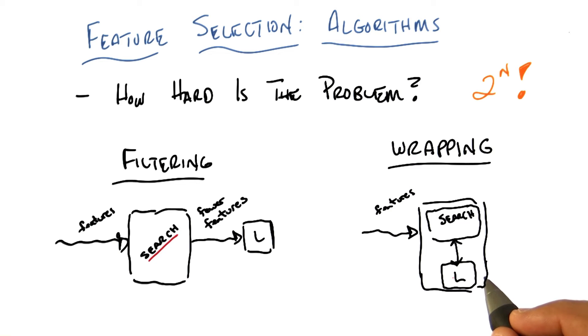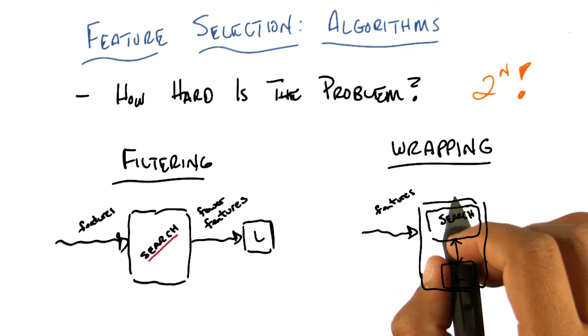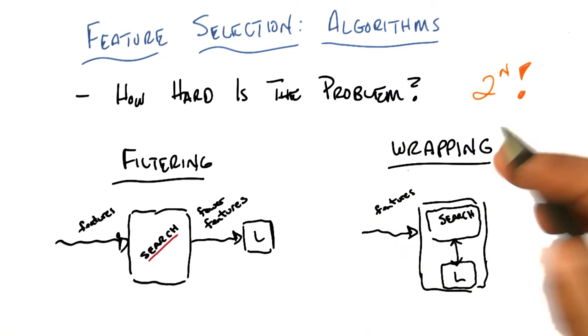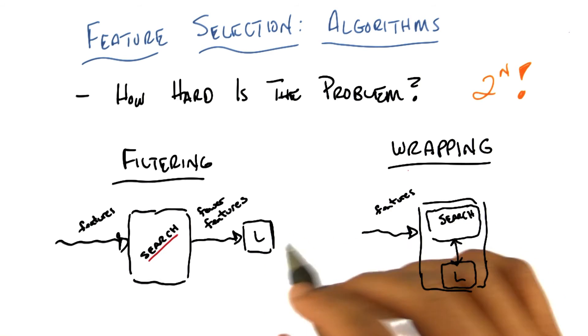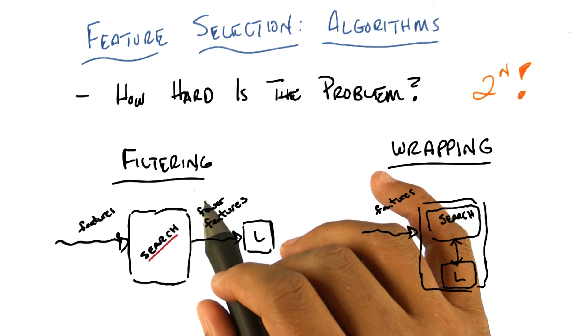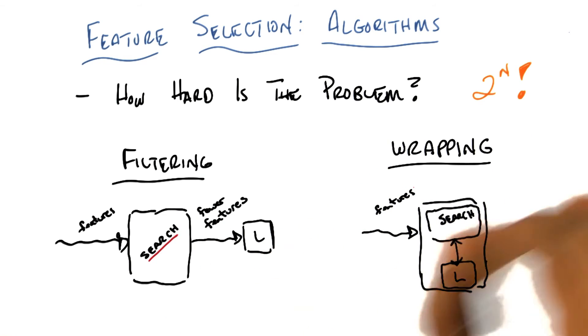I think so. Okay. So you might ask yourself, okay, great. So you've got two different approaches to this. Which one might you pick? And unsurprisingly, there are trade-offs. So let's talk a little bit about what those trade-offs are. Actually, before we do that, Michael, do you have any suggestions for what would be good or bad about filtering versus wrapping?